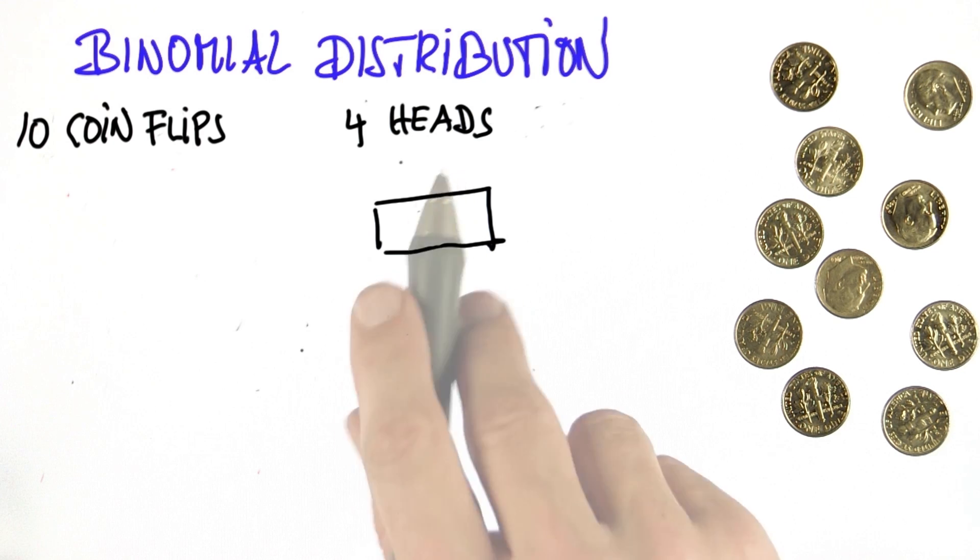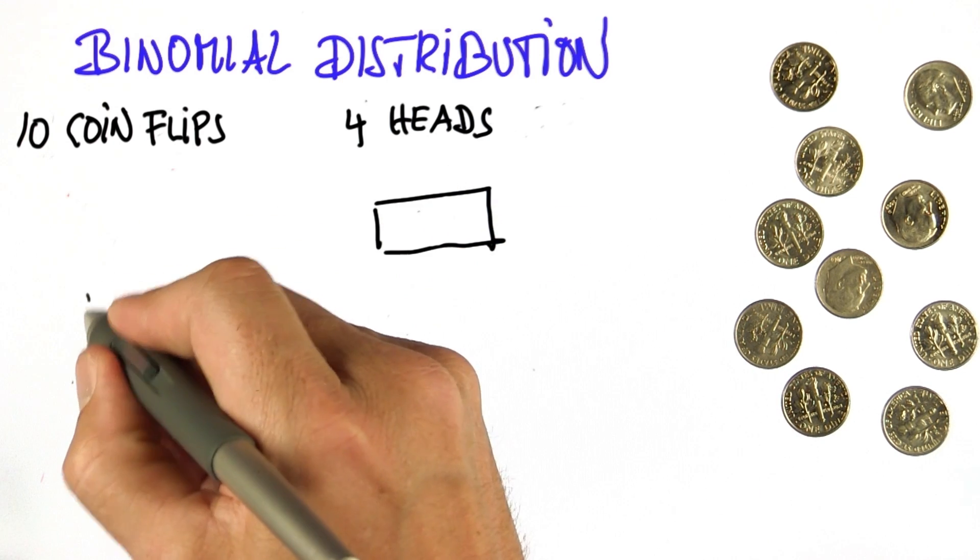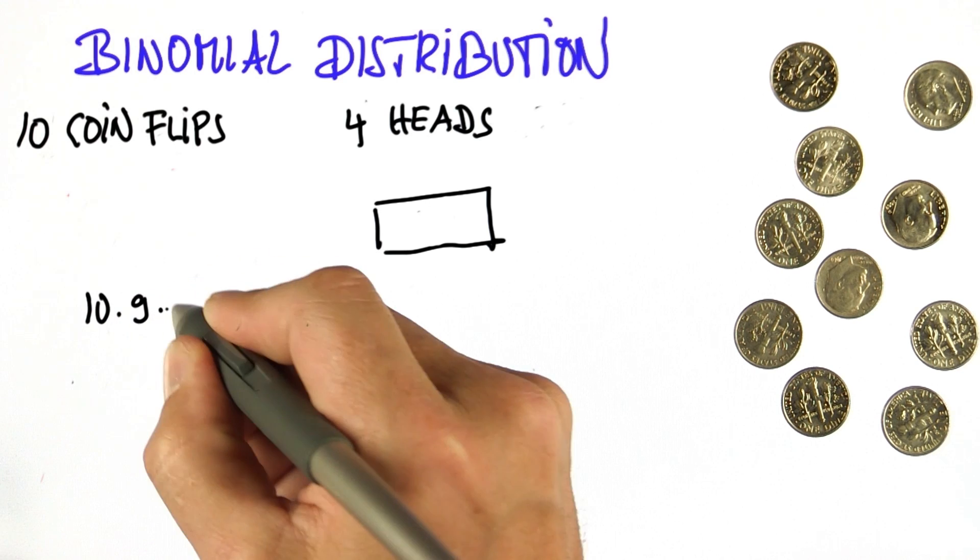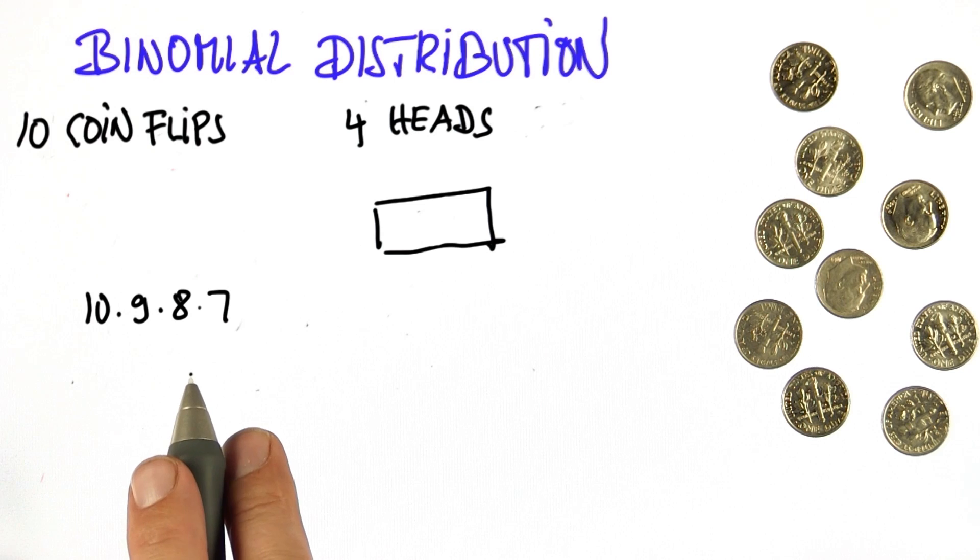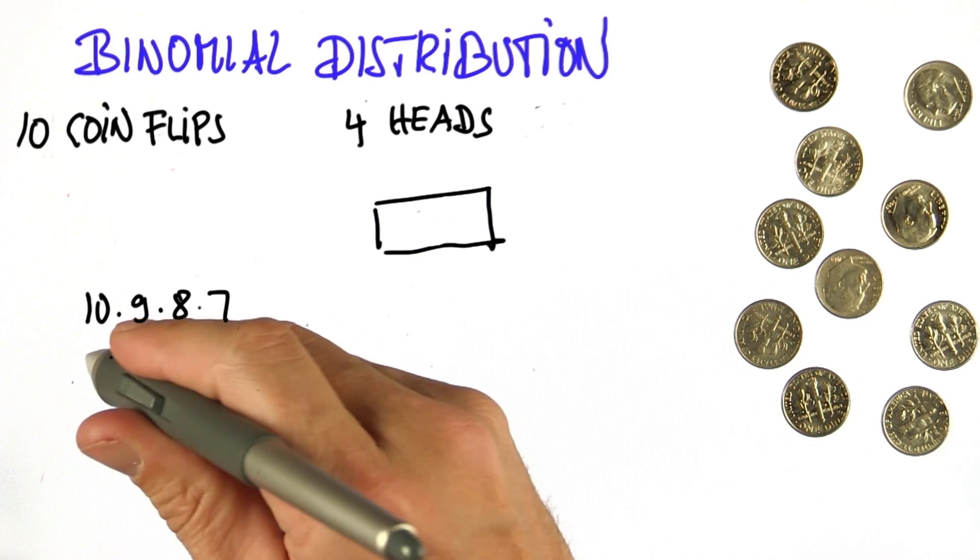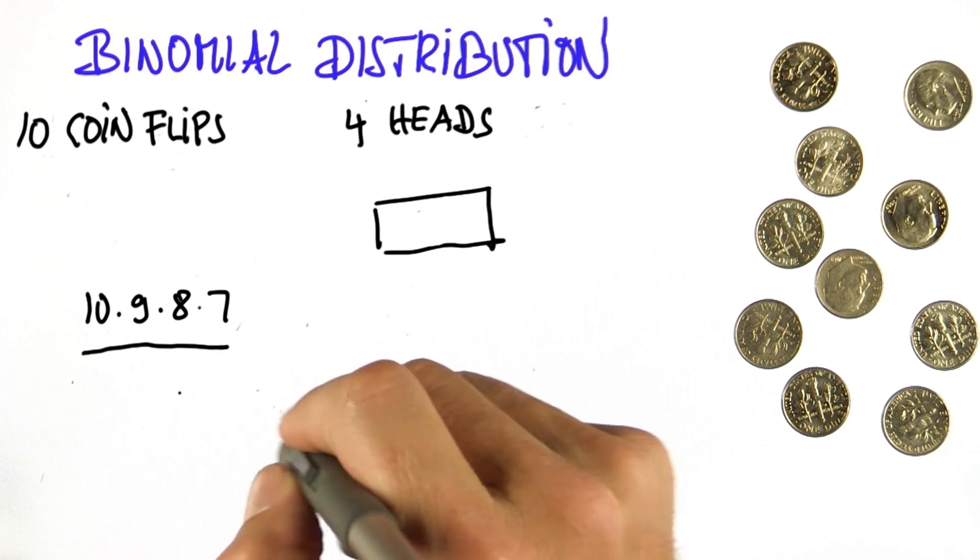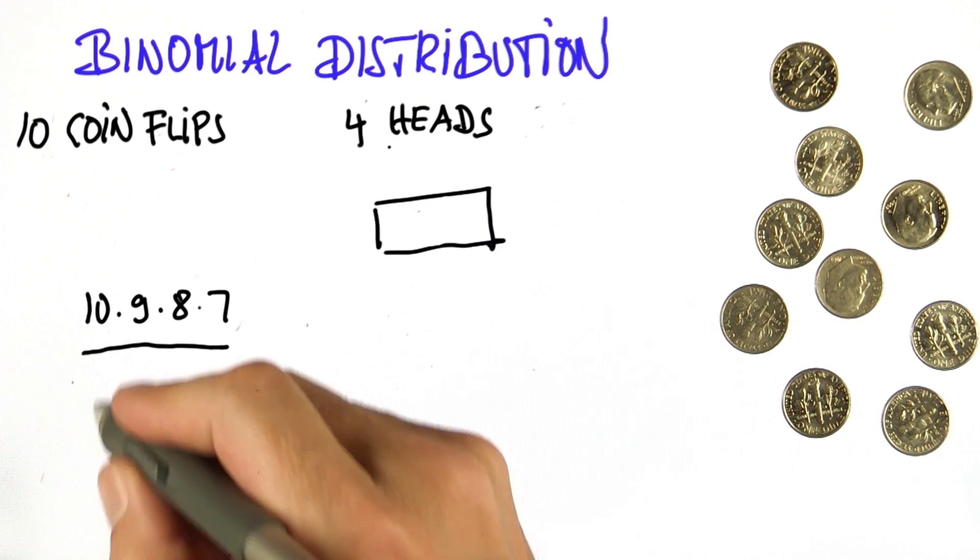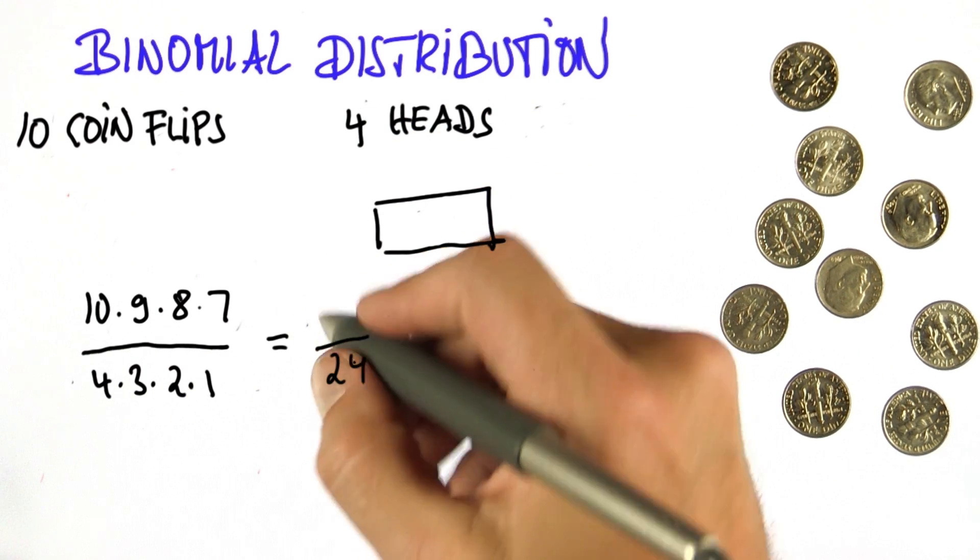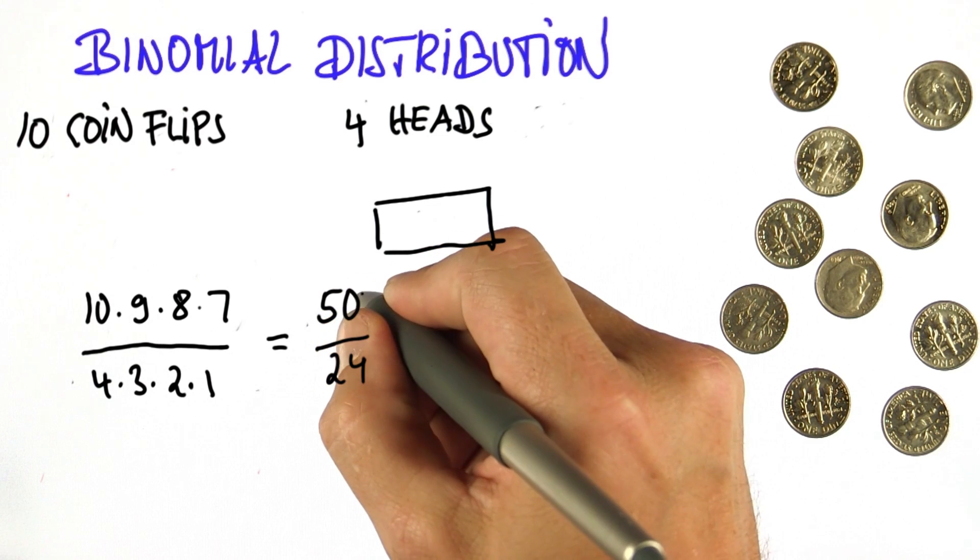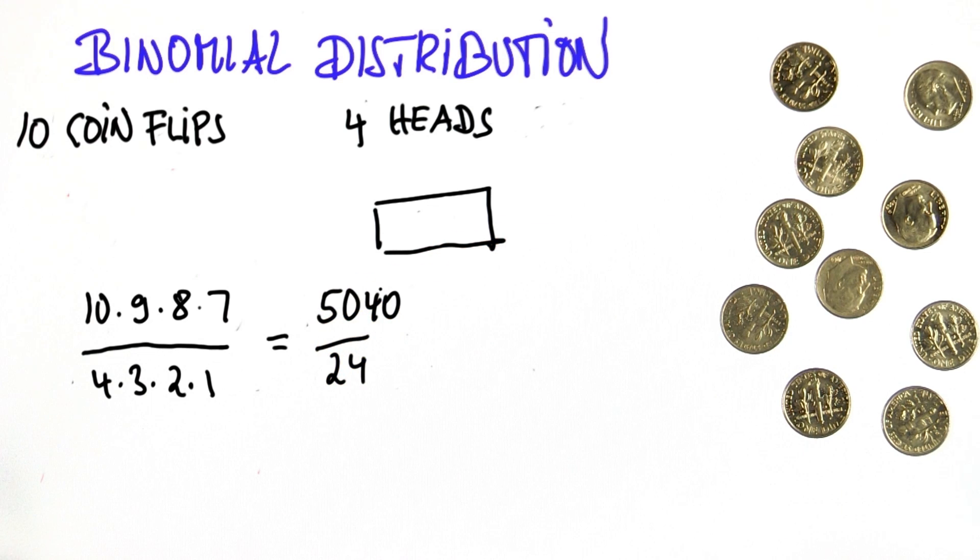The first time I do it for you, I can place those heads in 10 times 9 times 8 times 7 different slots. But I've over-counted. Now that I'm committed to having chosen those slots, the permutations of those are 4 times 3 times 2 times 1. And that gives me 5,040 over 24, also known as 210.